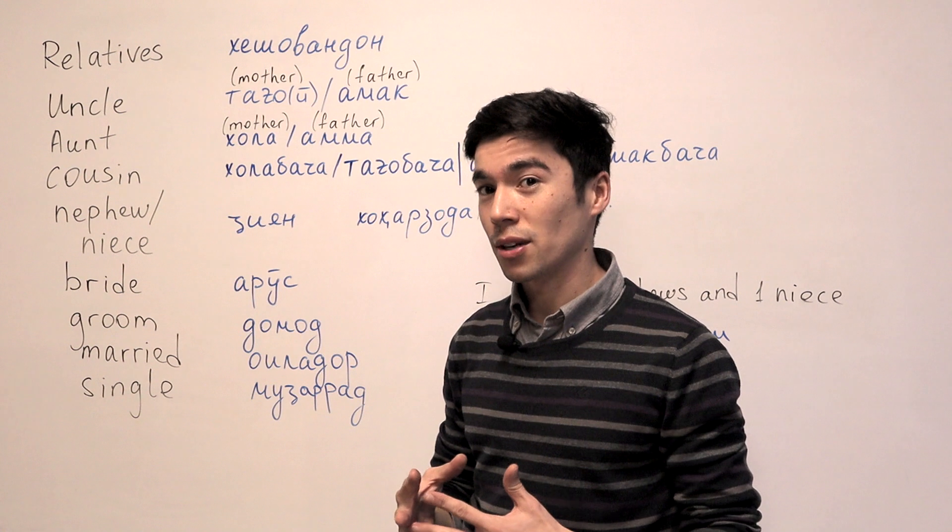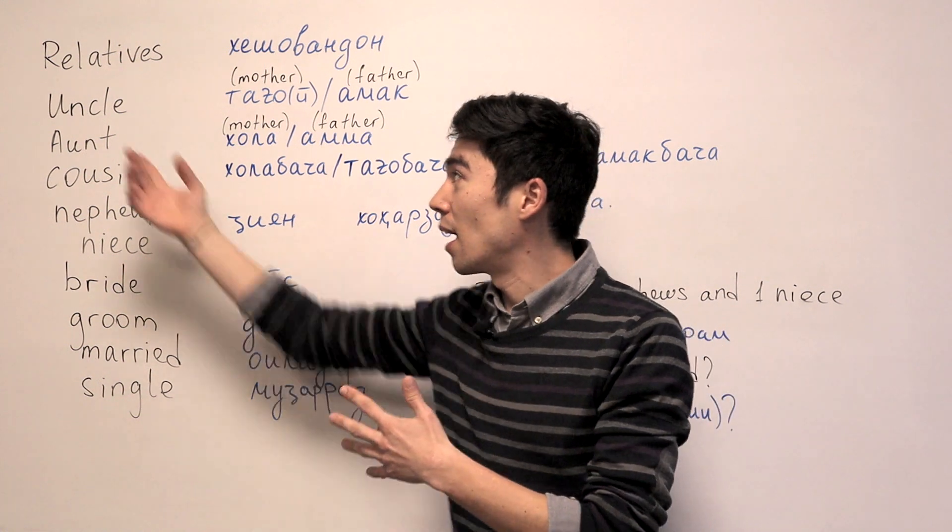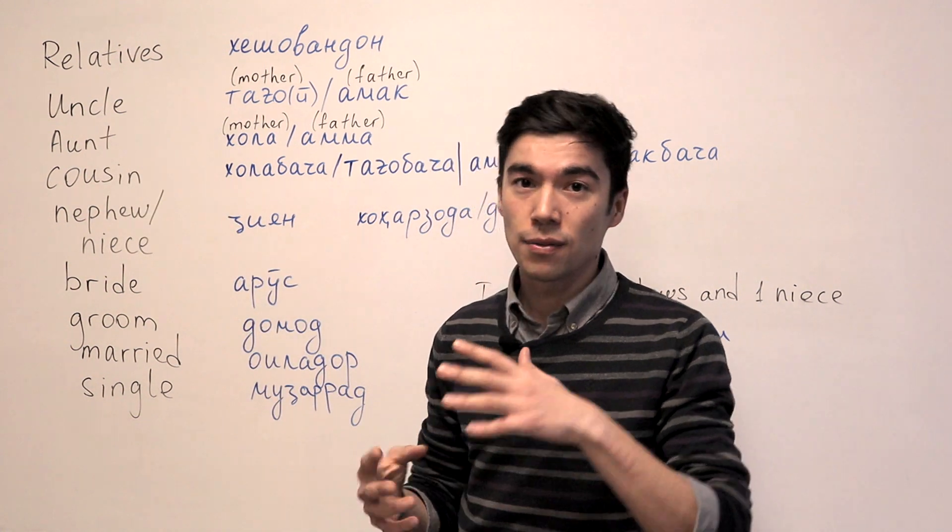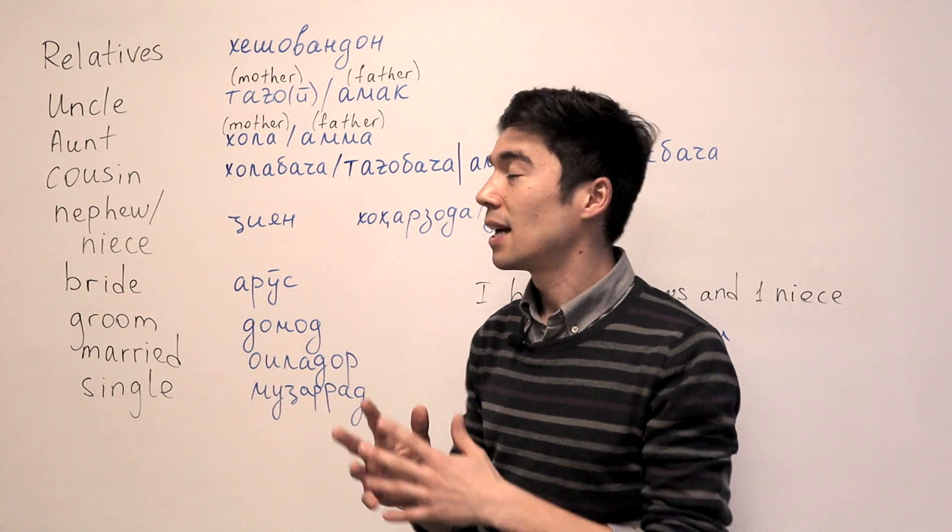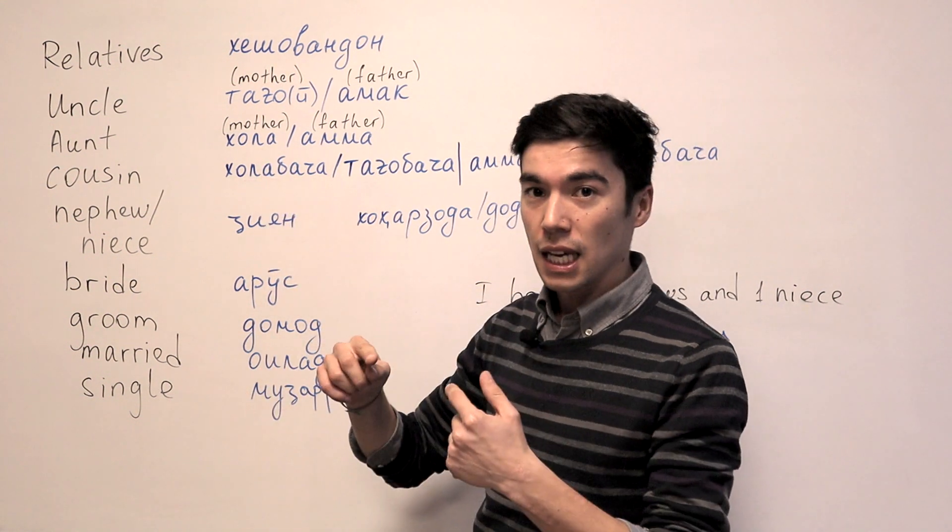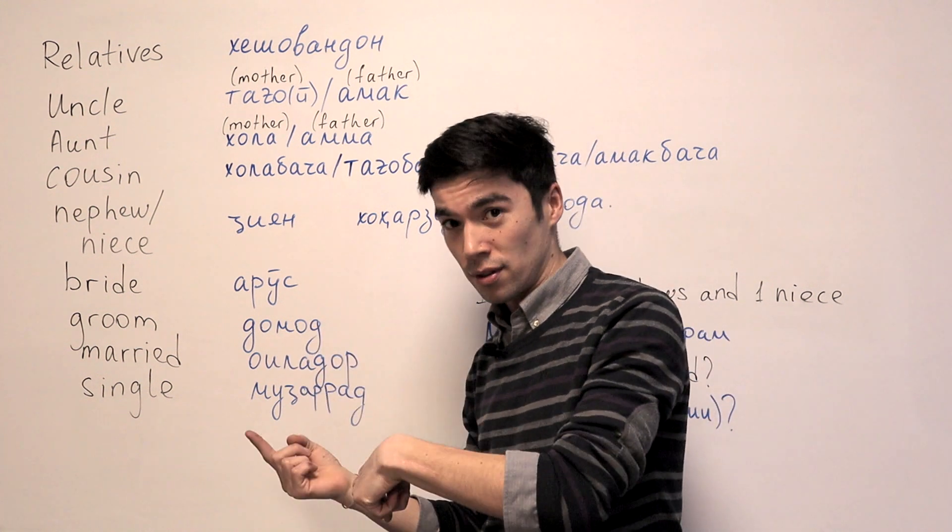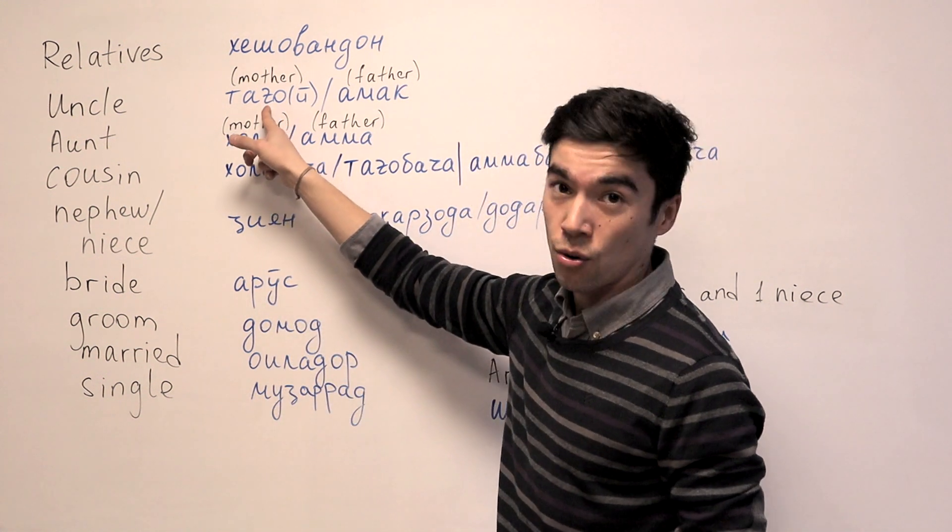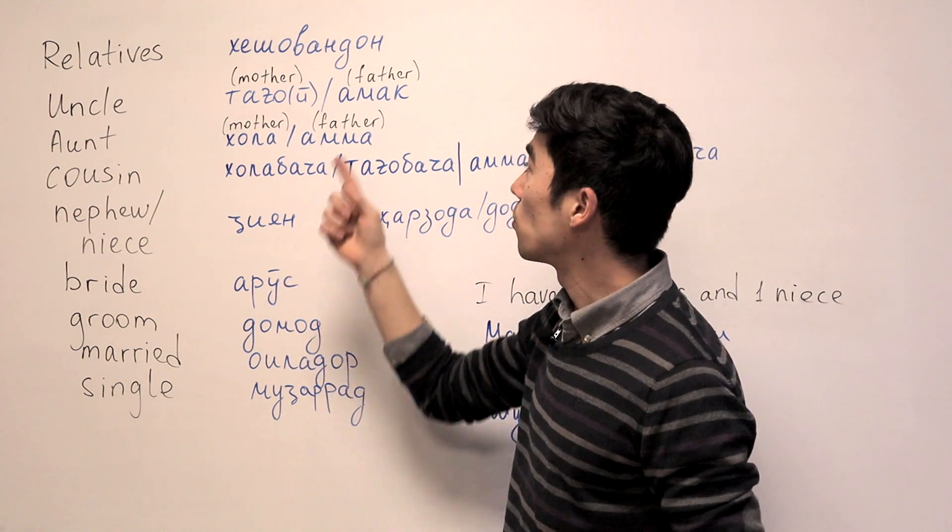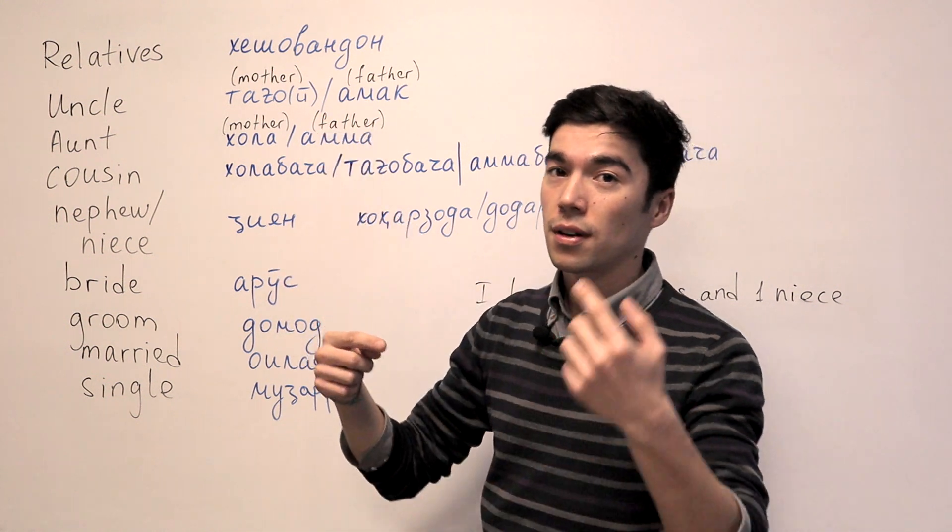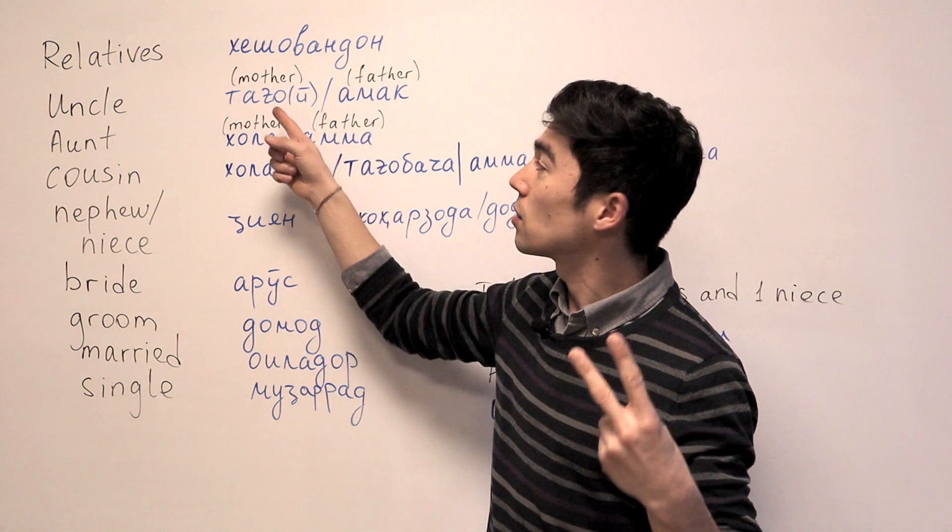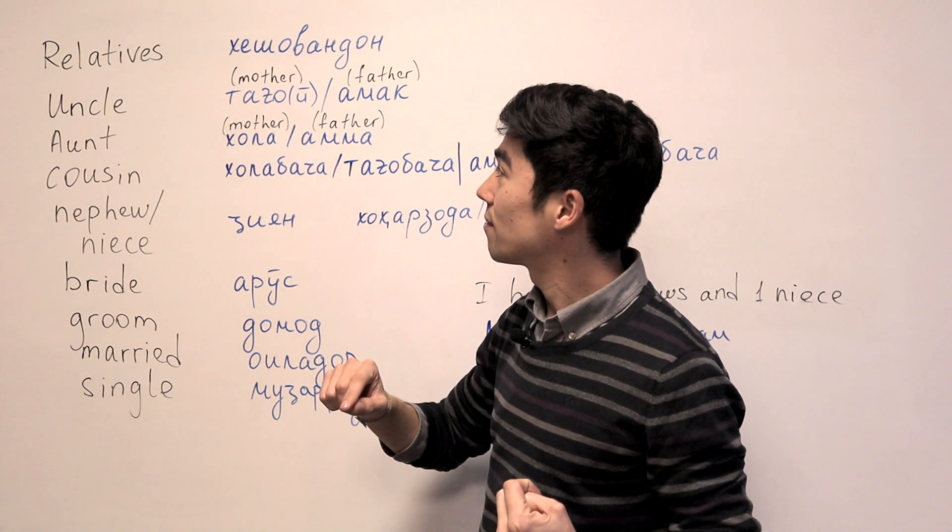And this is a bit complicated because in English, you just say uncle. It doesn't matter if it's from your father's side or mother's side. But in Tajik, if that person is your mother's brother, we say Taho. And from the father's side, we say Amak. So I have one Amak and two Taho.